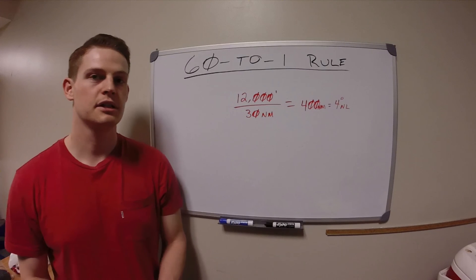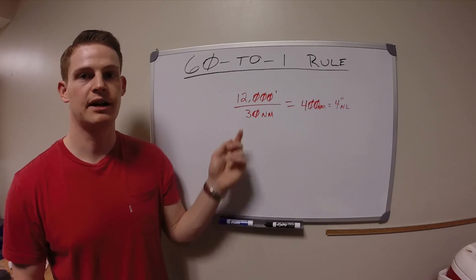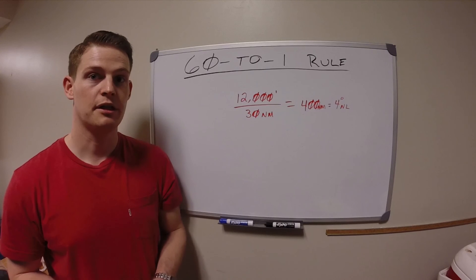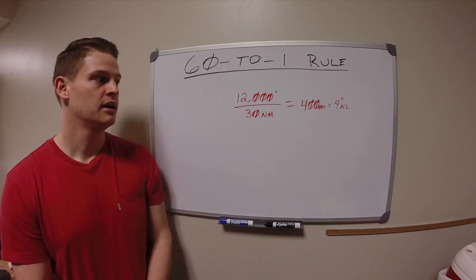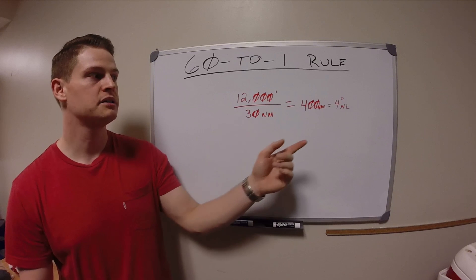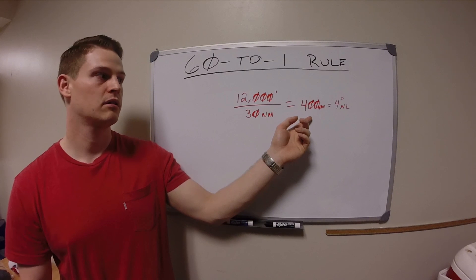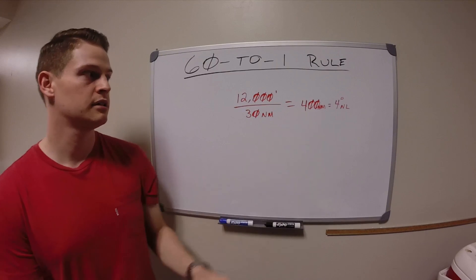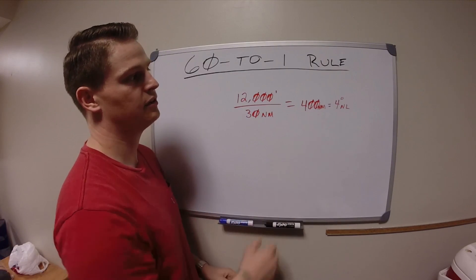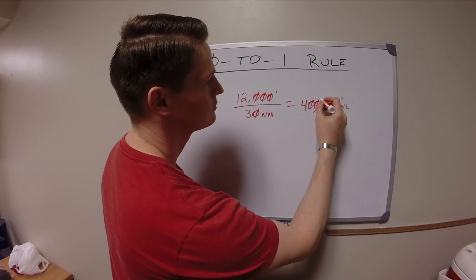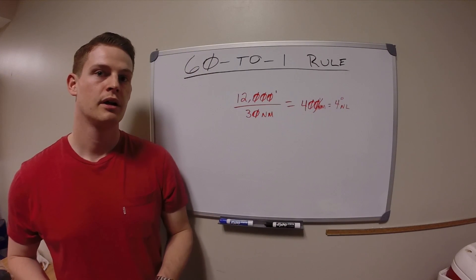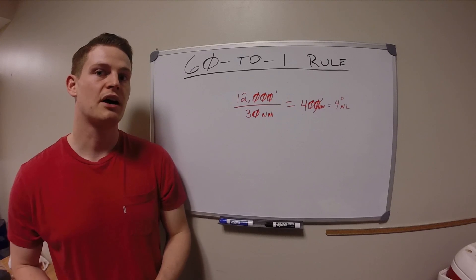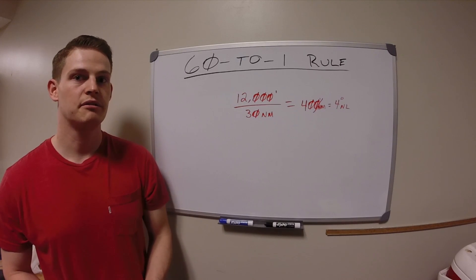For example, let's say I have 12,000 feet to lose and I forgot to ask for a descent — now I'm only 30 miles from where I need to be at my new altitude. We take 12,000 feet divided by 30 miles, which gives us 400 feet per nautical mile that we have to lose, corresponding to 4 degrees nose low. If we're traveling at 4 miles per minute, that means I would need at least 1,600 feet per minute on the VSI in order to achieve that.